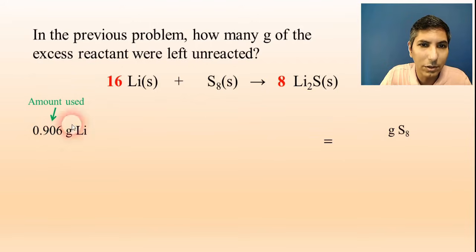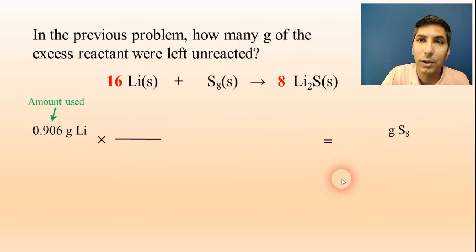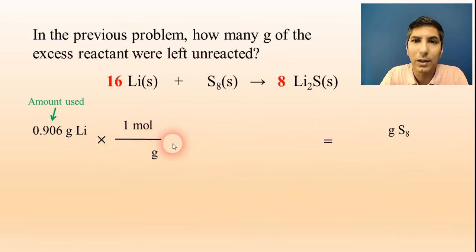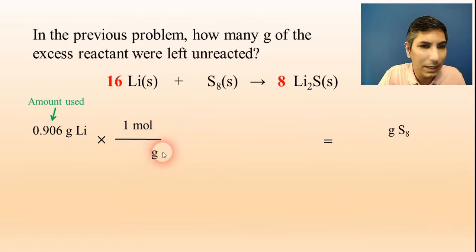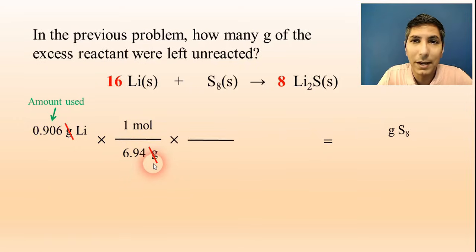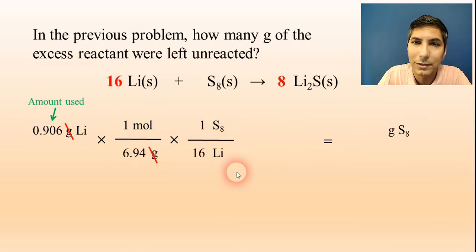We're going to figure out how many grams of sulfur were used. That requires another stoichiometry process. Take grams on the bottom and one mole on top to convert to moles — the atomic mass of lithium is 6.94, so that's how many grams are in a mole. Grams cancel. Now the mole ratio: lithium on the bottom, sulfur on the top. According to the coefficients, this is a 16-to-1 mole ratio.